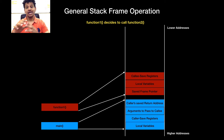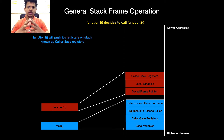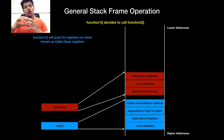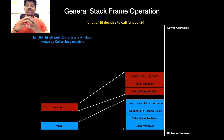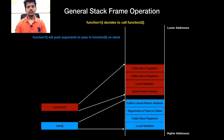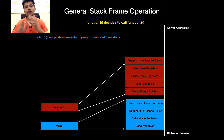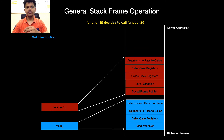Now function 1 decides to call function 2. First, it will push its registers onto the stack, known as the caller-save registers, so those registers won't be changed by function 2. Function 1 will push arguments to pass to function 2 onto the stack from right to left. After that, the call instruction.